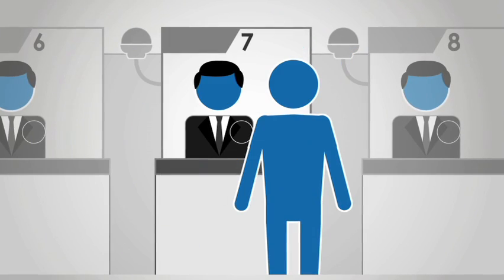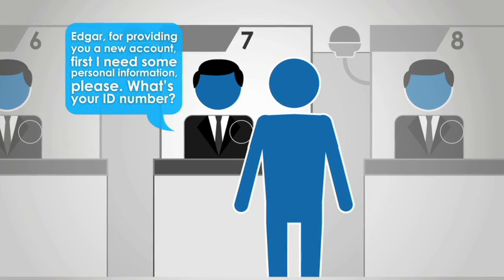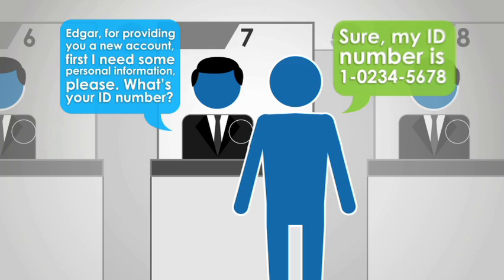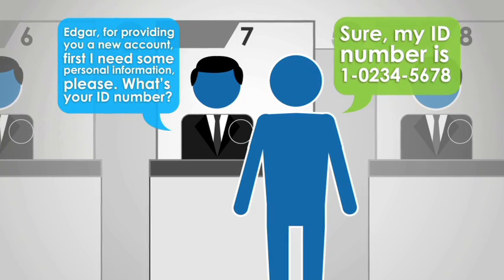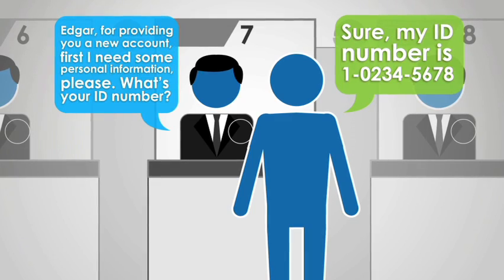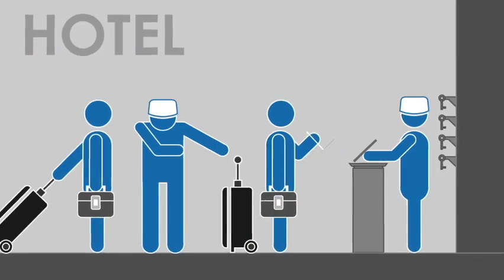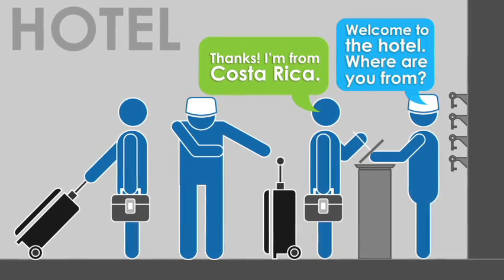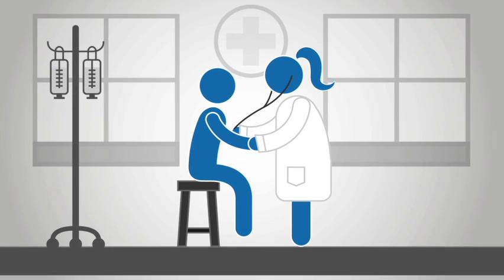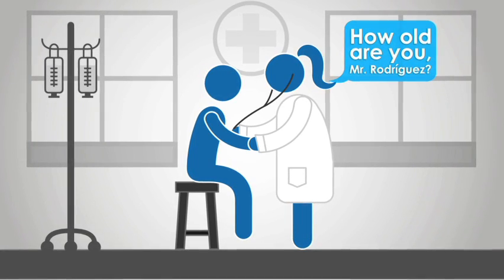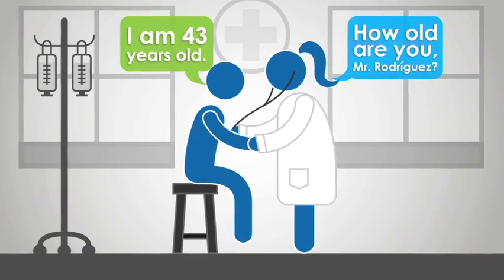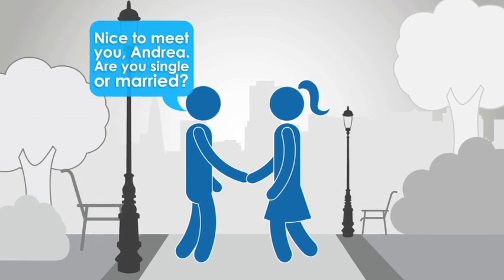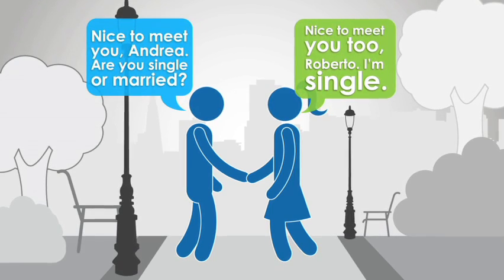At the bank: Edgar, for providing you a new account, first I need some personal information, please. What's your ID number? Sure, my ID number is 102-345678. At the hotel: Welcome to the hotel. Where are you from? Thanks, I'm from Costa Rica. At the hospital: How old are you, Mr. Rodriguez? I am 43 years old. Meeting someone for the first time: Nice to meet you, Andrea. Are you single or married? Nice to meet you too, Roberto. I'm single.